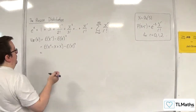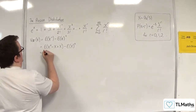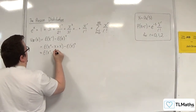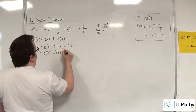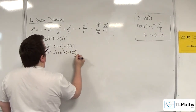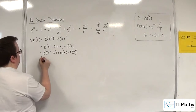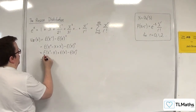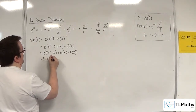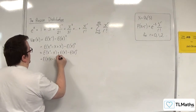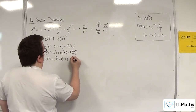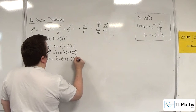What that enables me to do is now break that apart as E of X squared minus X, plus E of X, take away E of X squared. And I'm going to factorise this to make X times X minus 1, plus E of X, take away E of X squared.